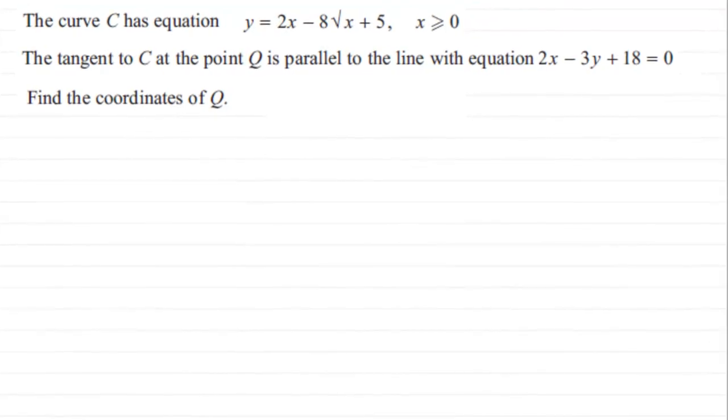Hi. Now, what we have then is, in this question, the curve C has equation y equals 2x minus 8 root x plus 5, where x is greater than or equal to 0. And we're told that the tangent to the curve C at the point Q is parallel to the line with equation 2x minus 3y plus 18 equals 0. And we've got to find out the coordinates of the point Q.